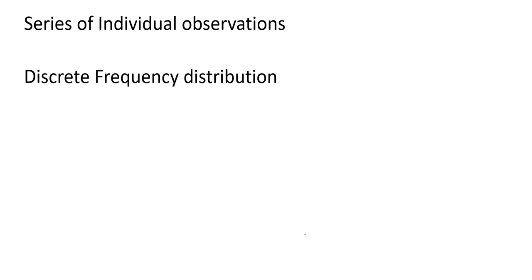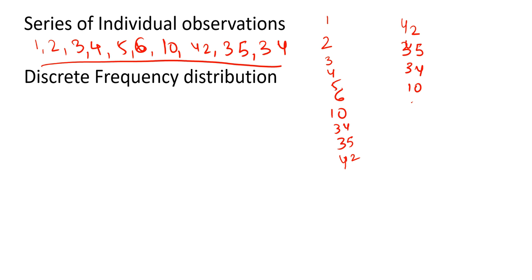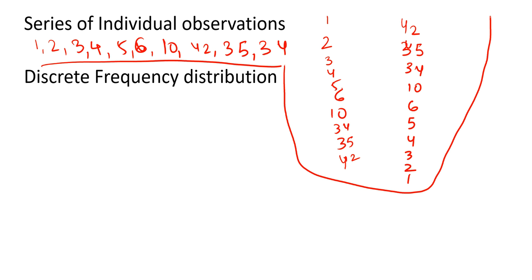Now we will understand each one. Series of individual observations: I have data with all the ages of people, for example anyone in a park. When arranging in ascending order, the smallest value comes first and the highest value last — like 1, 2, 3, 4, 5, 6, 10, 34, 35, 42. When putting the maximum value first, we reverse the entire order: 42, 35, 34, 10, 6, 5, 4, 3, 2, 1. This is my series of individual observations.